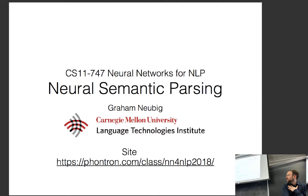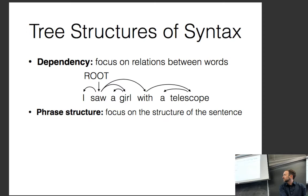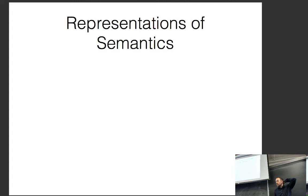Up until this point we've talked about tree-structured representations of syntax, like dependency parses or phrase structure parses. This time I want to talk about representations of semantics. There was recommended reading — it was recommended and not required because it's relatively extensive, but if you haven't taken a look at it, the reading on semantic structure is very informative and interesting, although it doesn't really cover neural models.